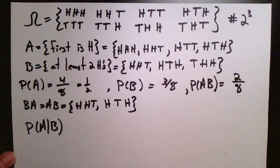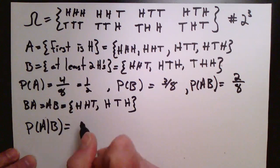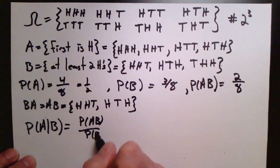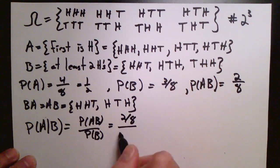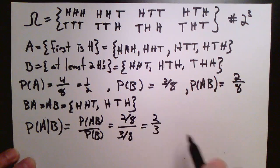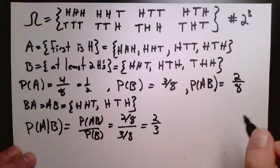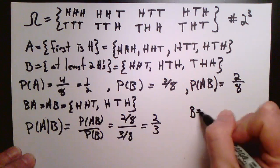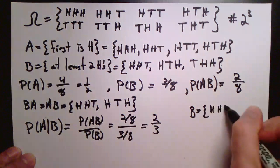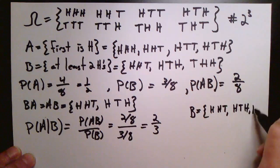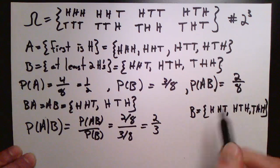Now, what if we know that we have B has happened, but we want to know what's the chance that in addition A happens? This is written A vertical bar B and read the probability of A given that B happens. And it's defined as the probability of A, B, divided by the probability of B. And if we calculate that, that's two eighths divided by three eighths, or two thirds.